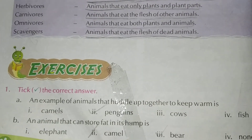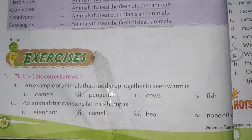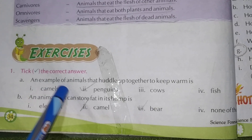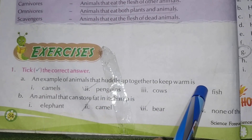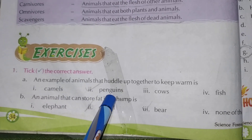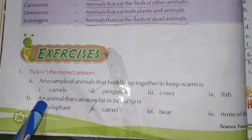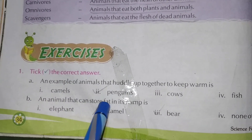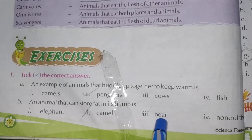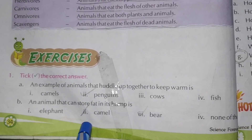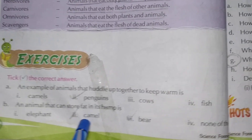Next students, tick the correct answer. Number 1, Part A: An example of animals that huddle up together to keep warm is camels, penguins, cows, or fish. Tick penguins. Part B: An animal that can store fat in its hump is elephant, camel, or bear. Tick camel.